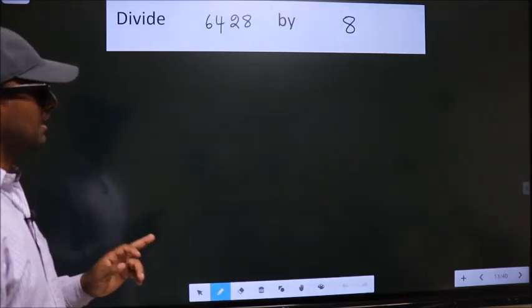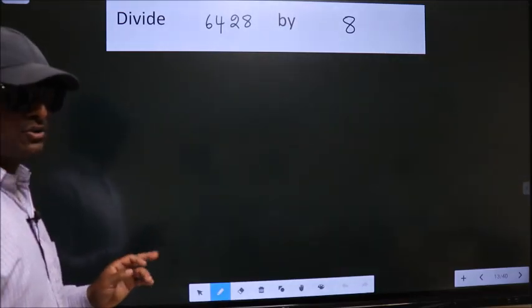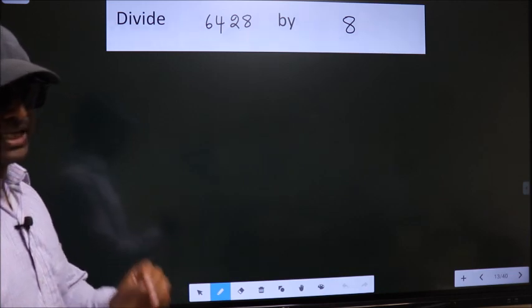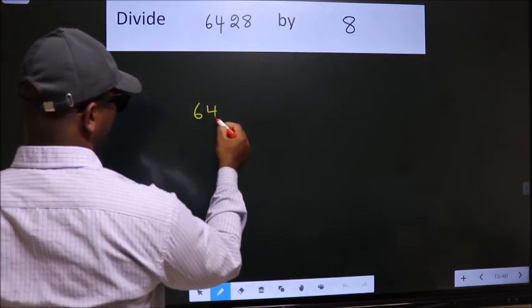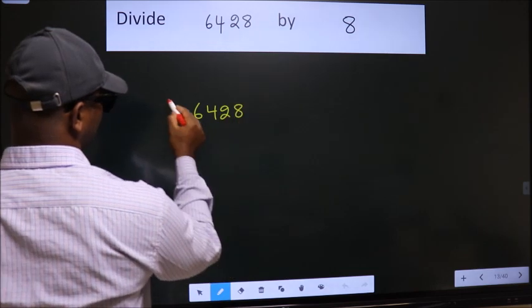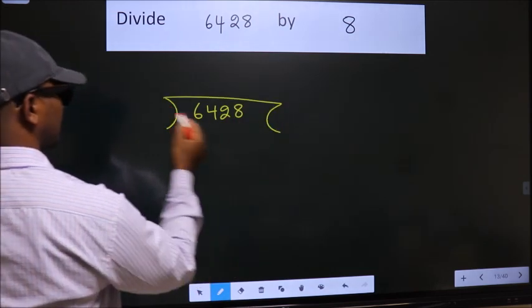Divide 6428 by 8. To do this division, we should frame it in this way: 6428 here, 8 here.